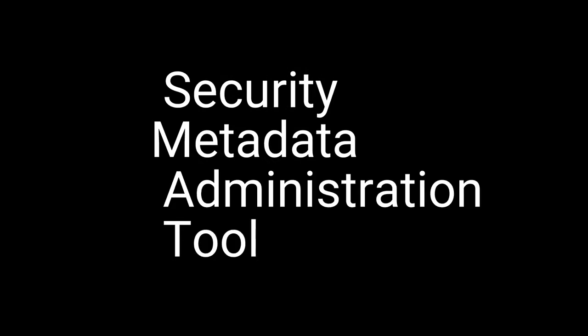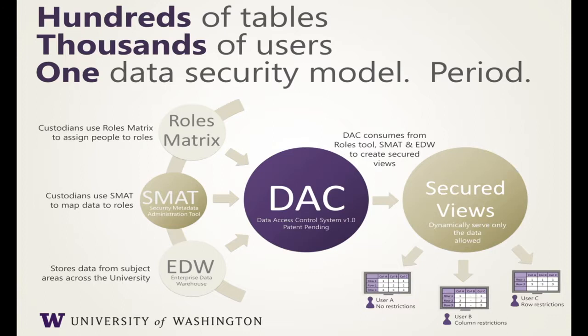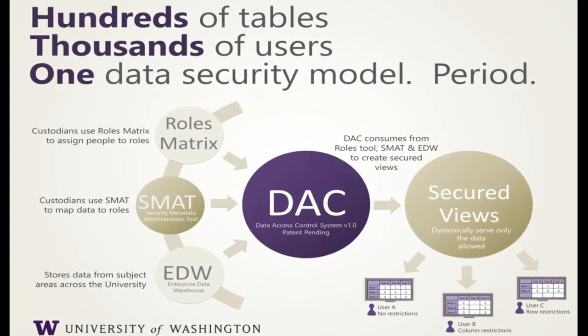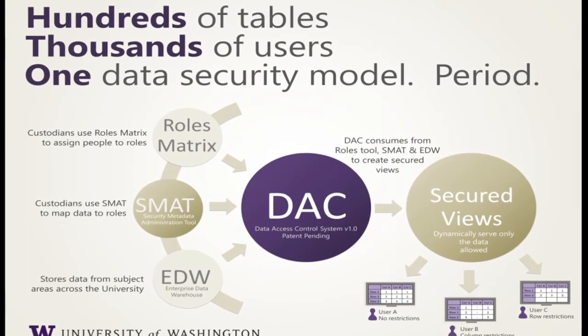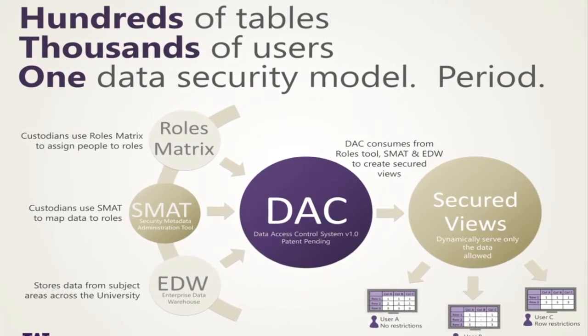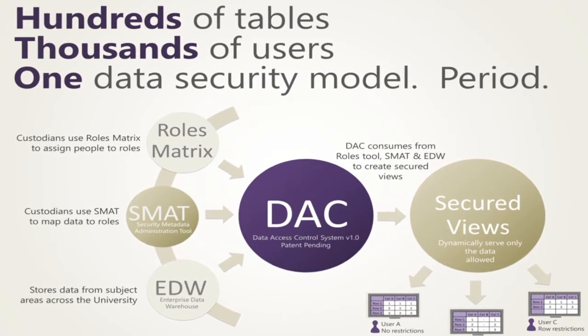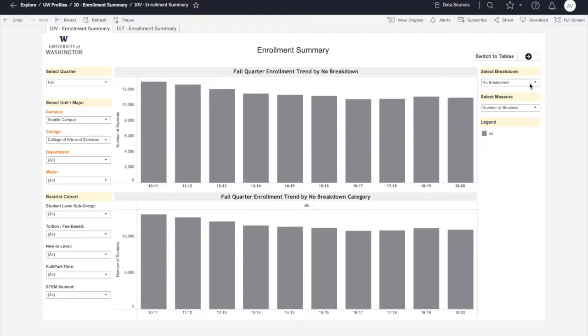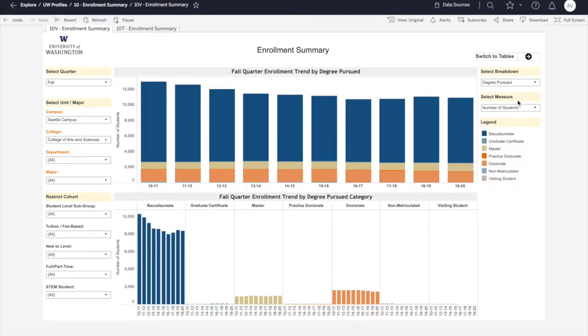SMAT stands for Security Metadata Administration Tool. It's a web-based tool that allows a data custodian or their delegate to define if a given role can view a specific database table or column. Essentially, SMAT allows a custodian to manage the rules in the DAC, and the DAC enforces those rules when a user connects to and queries the EDW, either directly or through an interface like an enterprise report or dashboard.